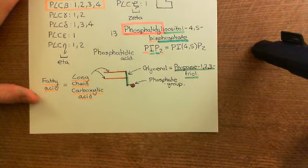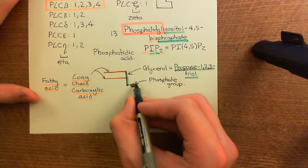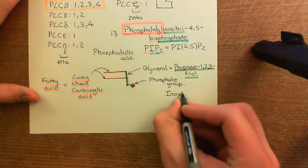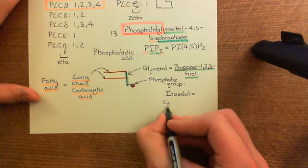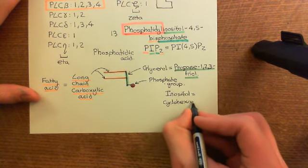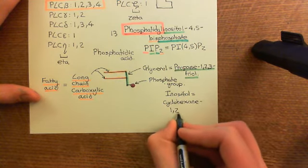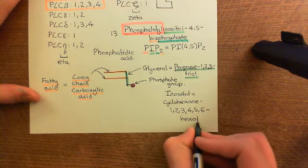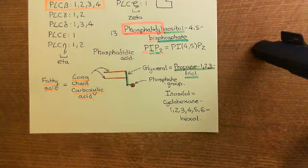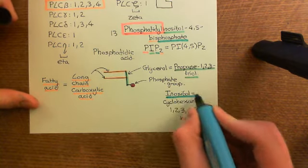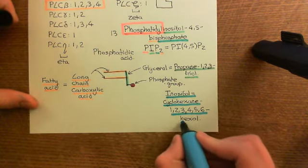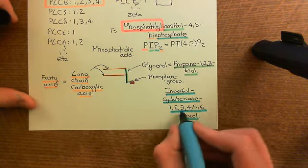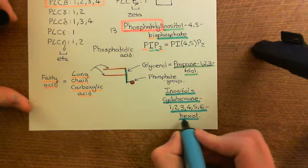To turn phosphatidic acid into phosphatidyl inositol, you attach an inositol ring onto the phosphate group. Inositol — more correctly called cyclohexane-1,2,3,4,5,6-hexol — is a six-carbon molecule in a ring with an alcohol group coming off every single one of the six carbons. There's a subtlety here: optical isomerism. Off each carbon, one bond comes out of the page towards us and the other goes into the page, so you must decide which direction each alcohol group faces — giving rise to multiple optical isomers.